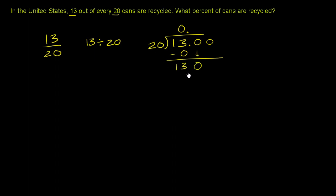20 goes into 130. Let's see. It goes in 5 times, 20 is 100. So 6 times 20 is 120. So it's going to go 6 times. 6 times 20 is 120. You subtract. You get a 10.